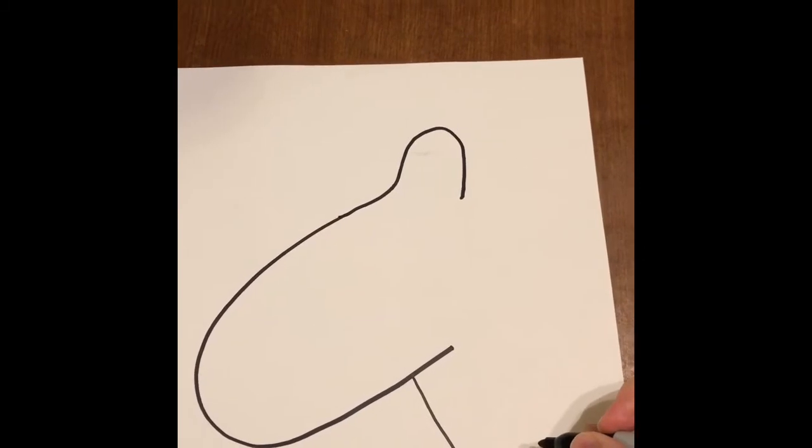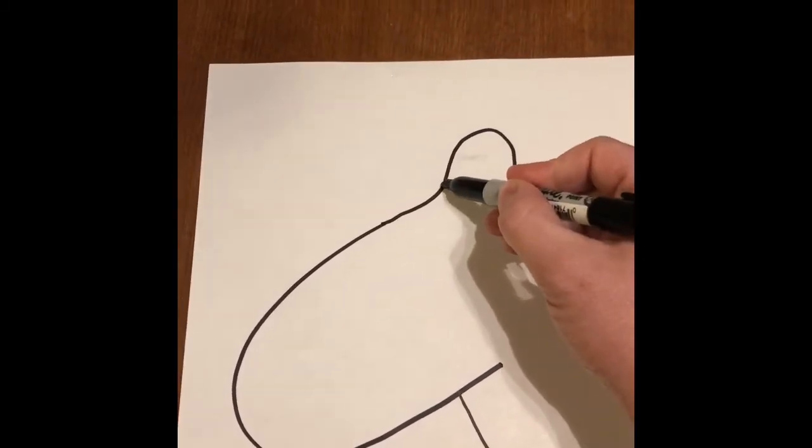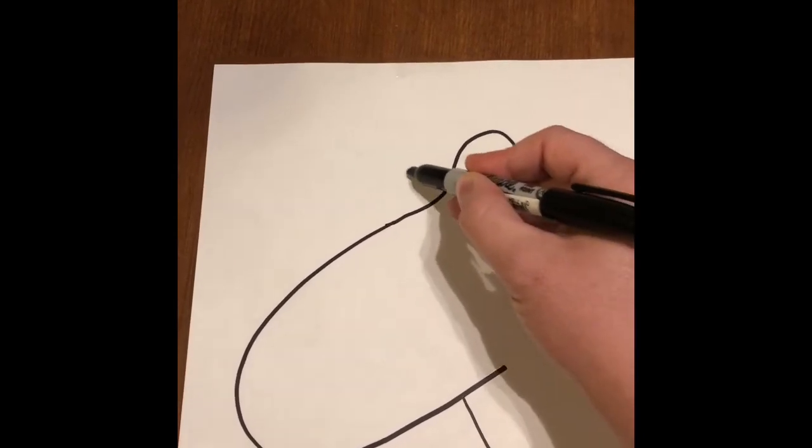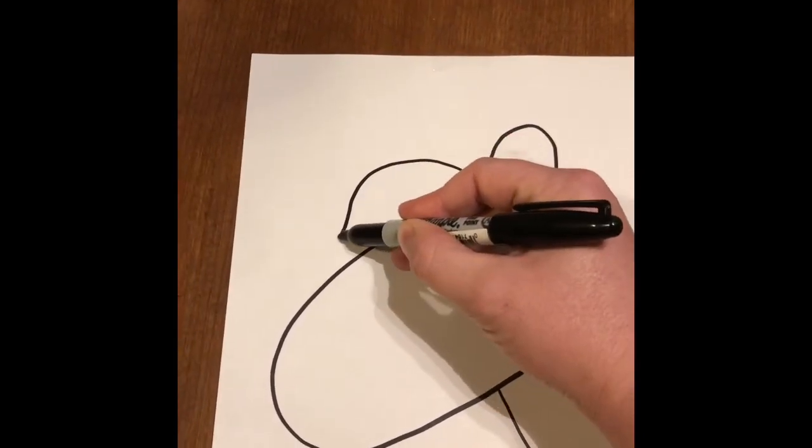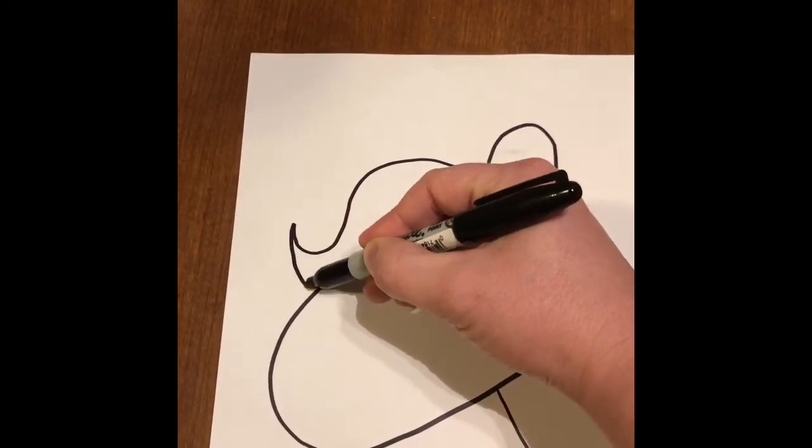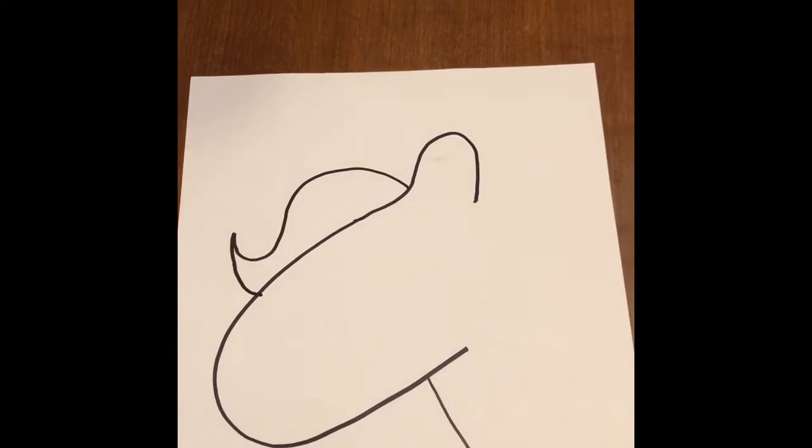Next I'm going to draw the hair. So I'm gonna start here right in between the beginning of the nose and the ear and I'm gonna make a curve up. Then I'm gonna make a curve down. Then I'm gonna make another curve up and then I'm just gonna bring it down. There is my little lock of hair.